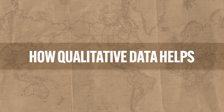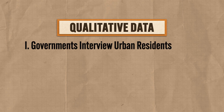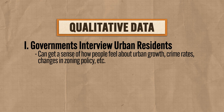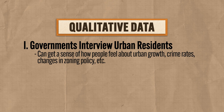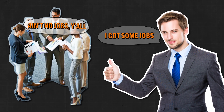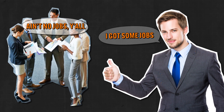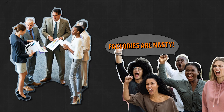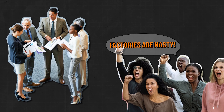The mathy-mathy stuff only tells part of the story, so we need to get a little feely-feely about some data. Governments collect qualitative data by interviewing urban residents, getting a sense of how people feel about urban growth, crime rates, changes in zoning policy, etc. Suppose the city government sees from census data that a lot of people are out of jobs, and a large corporation has had talks with city officials to build a light manufacturing outfit in a particular neighborhood. According to the quantitative data, that's a no-brainer — a new factory is going to create jobs, so build the factory. But then suppose they ask residents how they feel about that potential decision by collecting qualitative data, and find out that residents are very negative about the plant being built near their neighborhood because of the noise, pollution, and other reasons.